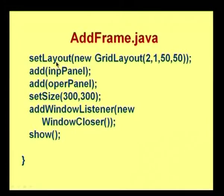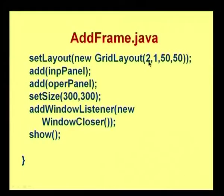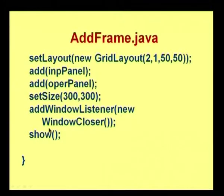I create an instance of the operation panel using FlowLayout, and add the save button to it. Then I call setLayout for the AddFrame using GridLayout with 2 rows and 1 column — one row for the input panel and the other row for the operation panel. I add input panel and operation panel, set the size, and add a window listener with a new WindowCloser adapter.